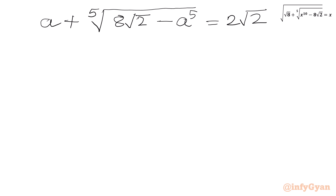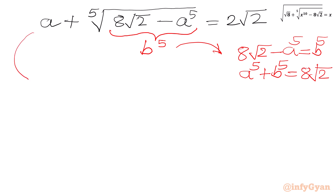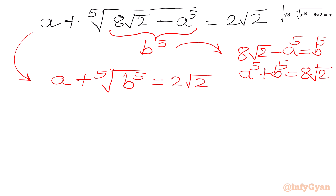Now we will consider a second substitution. Let the radicand equal B^5, so: 8√2 − A^5 = B^5, which gives us A^5 + B^5 = 8√2. From the original equation we get our second equation: A + fifth root of (B^5) = 2√2, and since the fifth root and power 5 cancel, A + B = 2√2.